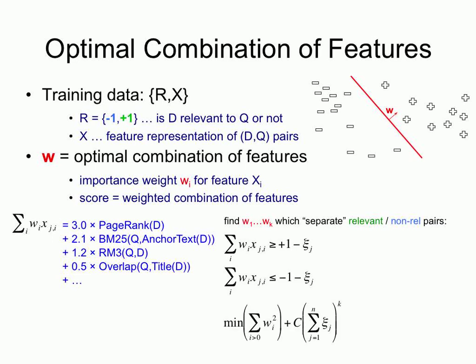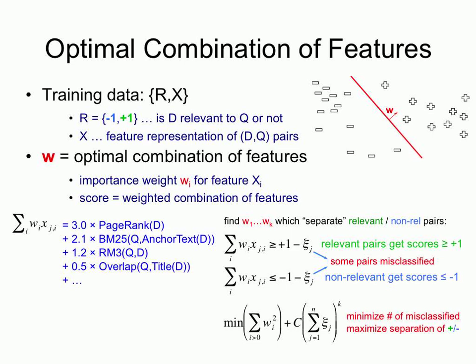You have the normal SVM formulation, adding slack variables. Slack variables handle the case when your data is not linearly separable — and in this case it won't be, because you don't have a huge dimensional space anymore. You have a relatively small number of features, maybe thousands, not billions. For all relevant pairs you should have scores bigger than plus one; non-relevant, smaller than minus one. Some will get misclassified — that's what the slack variables ψ represent. Your minimization function becomes minimizing the sum of slack variables, i.e., the total loss, the total number of misclassifications.